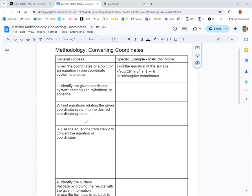So it's a good idea to identify the given coordinate system if that's not already explicit, and we can see from there being r, theta, and z in the equation that we are in cylindrical coordinates.